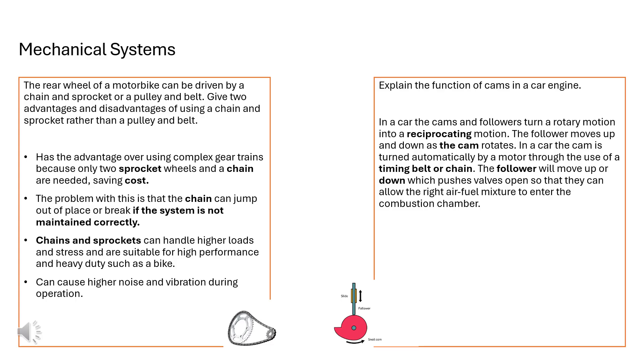Here are our answers to this question. The rear wheel of a motorbike can be driven by a chain and sprocket or pulley and belt. The chain and sprocket has an advantage over using complex gear trains because only two sprocket wheels and a chain are needed. This is going to save you cost. The problem with the chain is that sometimes it can jump out of place and break if it's not maintained correctly. So you do have an element and need to have an understanding of maintenance. Chains and sprockets can also handle higher loads and stress. They're also suitable for high performance and heavy duty such as using a motorbike. The other drawback is they can cause higher noise and vibration during their operation.